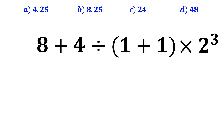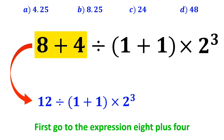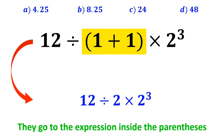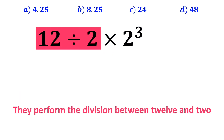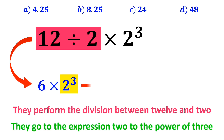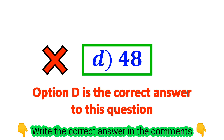Many people, to solve this question, first go to the expression 8 plus 4 and write 12 divided by 1 plus 1 inside the parenthesis multiplied by 2 to the power of 3. In the next step, they simplify inside the parenthesis to get 12 divided by 2 times 2 to the power of 3. Then they divide 12 by 2 to get 6 times 2 to the power of 3, and simplify to 6 multiplied by 8, which gives them 48. They quickly say option D is the correct answer — but this answer is absolutely wrong.